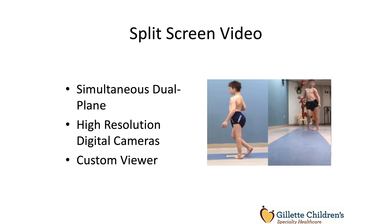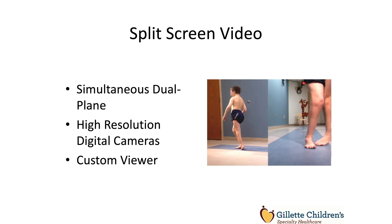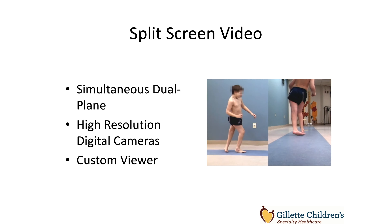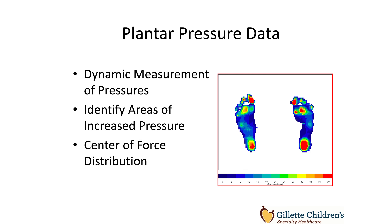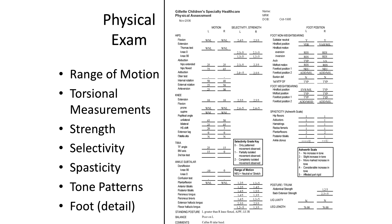When a patient goes to our gait lab, they get a split-screen video using high-resolution digital cameras with a custom viewer used for all reviews within our Gillette system. We also collect plantar pressures — similar to weather radar maps, these can be very helpful when talking to patients and families about what's going on with their feet. There is also a very detailed physical examination taking upwards of 45 to 50 minutes, done by a highly trained physical therapist looking at range of motion, alignment, strength, selectivity, spasticity, and other tone patterns. This format is fairly standard across most gait analysis laboratories.